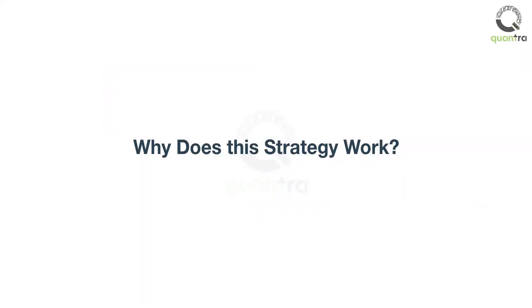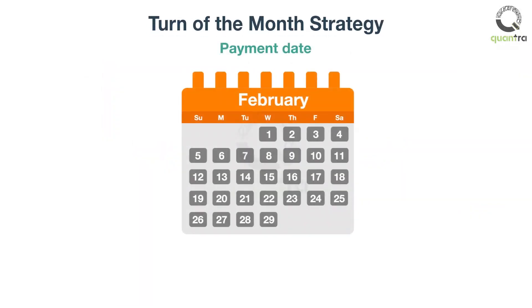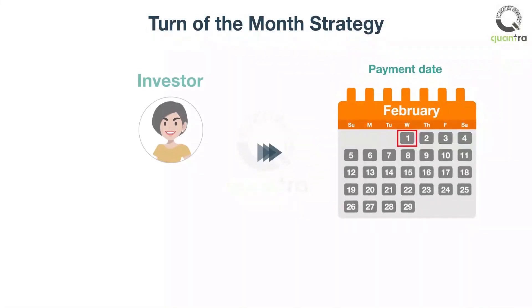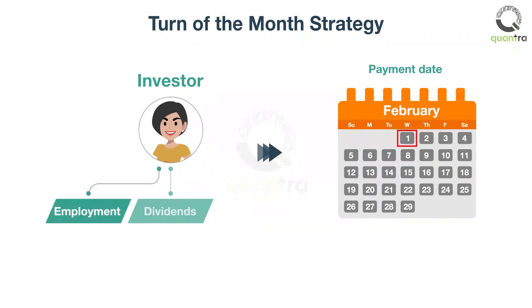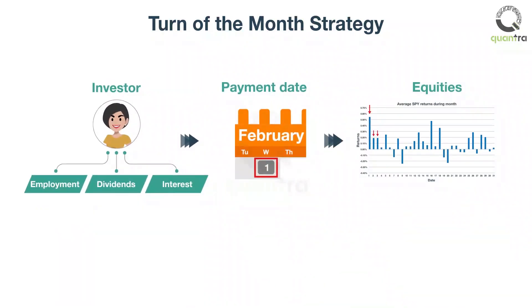Why does this strategy work? The reason for the functionality is not risk-based. According to the literature, the effect may be explained by the regularity and payment dates in the United States. Investors receive a preponderance of compensation from employment, dividends, and interest at month-end. Consequently, as investors seek to invest these funds, equity prices are pushed up.